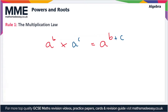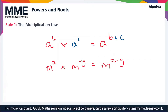It also applies when you have negative powers. For instance, if we have m to the power x times m to the power minus y, this is going to be equal to m to the power x minus y. It also applies when we have fractional powers — for instance, if we have x to the power one third multiplied by x to the power one sixth.